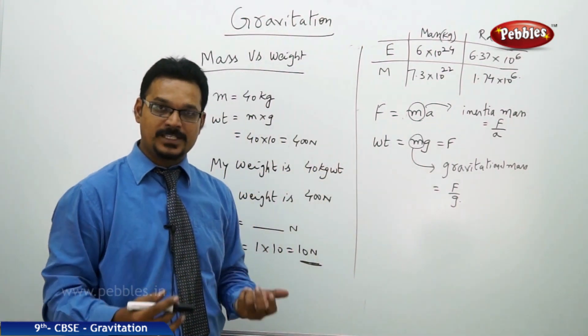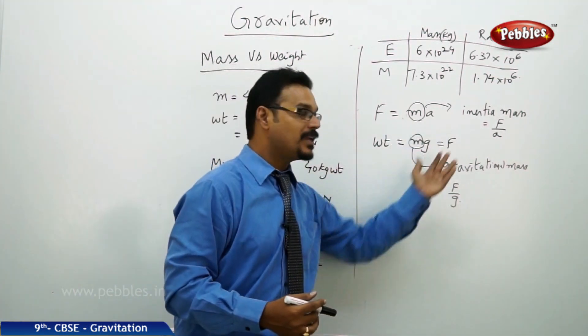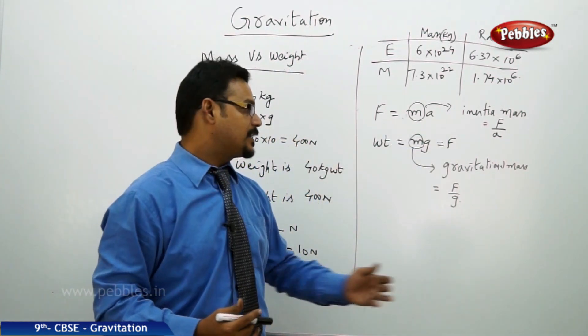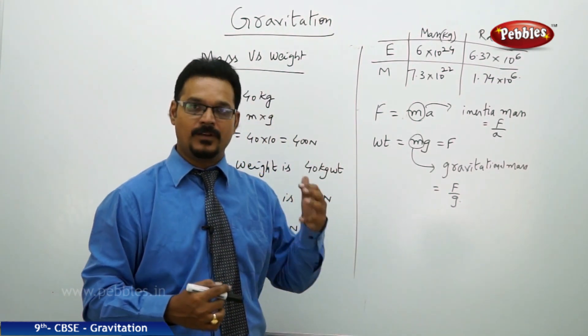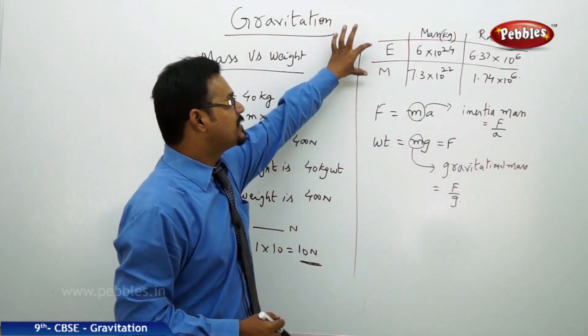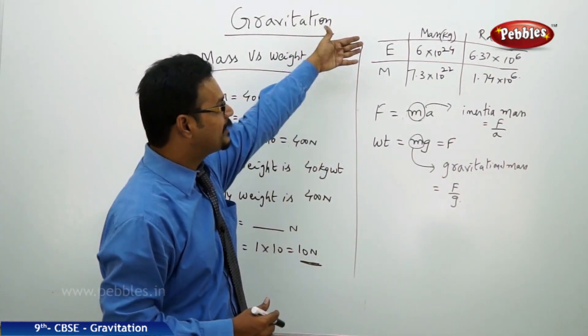So when somebody asks you what's the inertial mass, we need to go with F by a. If they ask gravitational mass, you have to go with F by g. Now come back to this table—why have I written the table there?